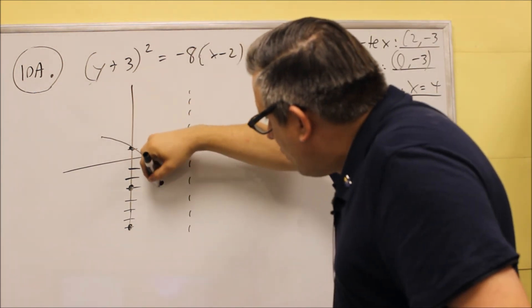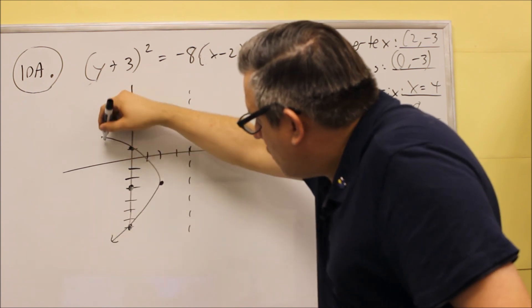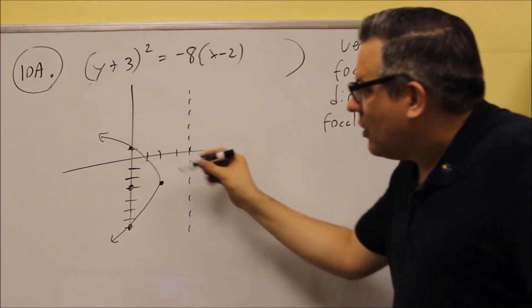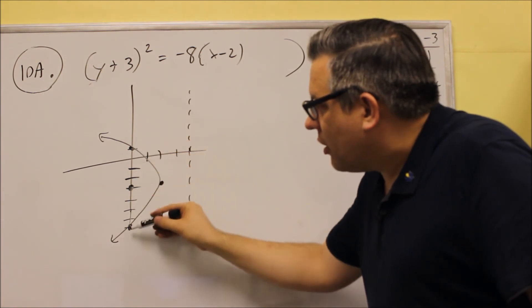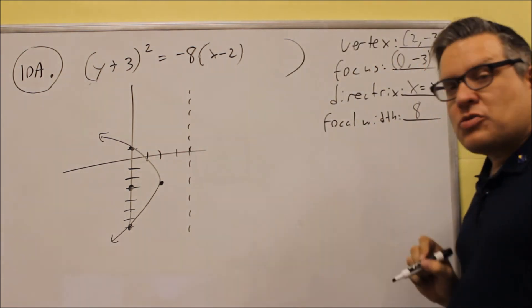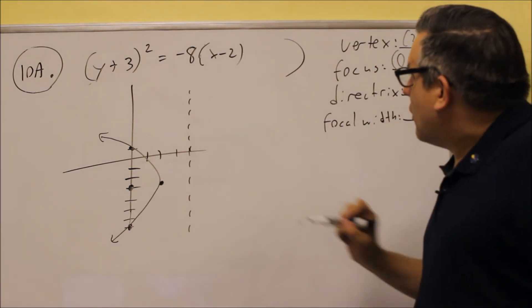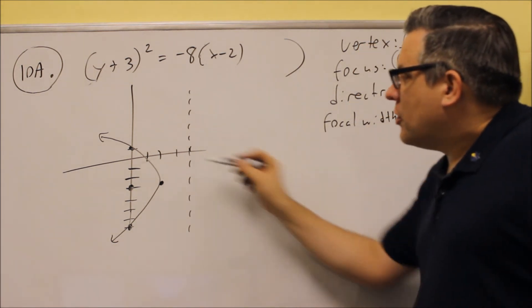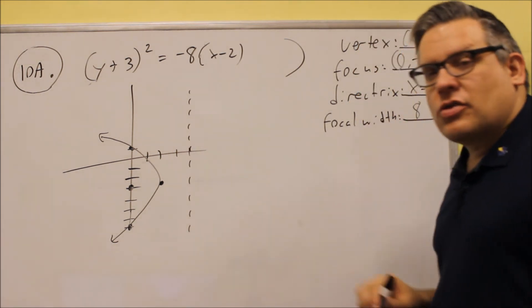So now the graph is, the parabola is going to come down through here and go out like that. And we know that the distance from here to here is 8, that's what it means by focal width. We have our vertex right there, it opens up to the left because of the formula.